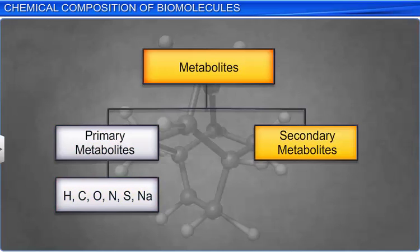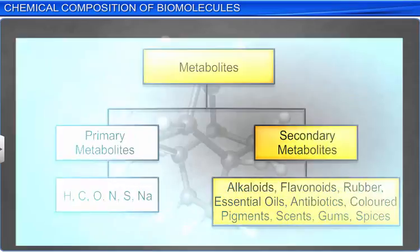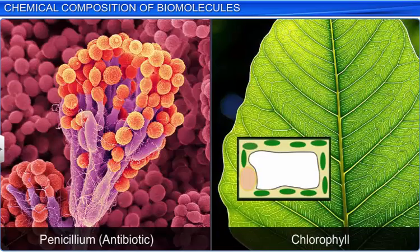On the other hand, compounds such as alkaloids, flavonoids, rubber, essential oils, antibiotics, colored pigments, scents, gums, and spices are known as secondary metabolites. They are found in plant, fungal, and microbial cells and perform an important ecological function. Some of them play a helpful role as antibiotics and pigments.